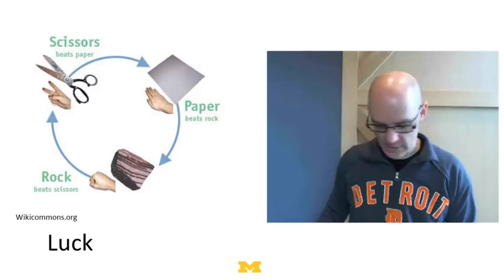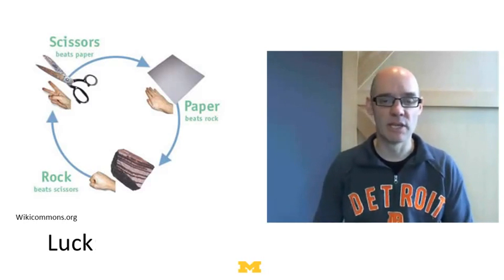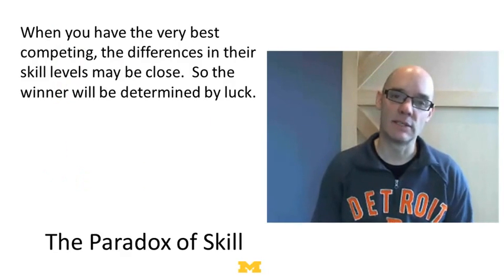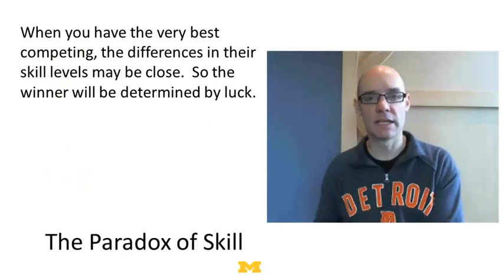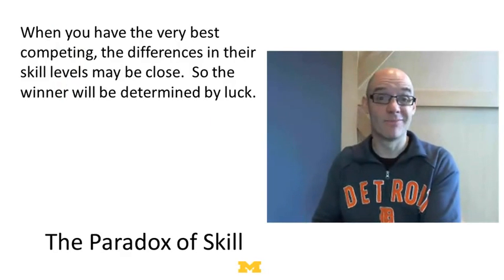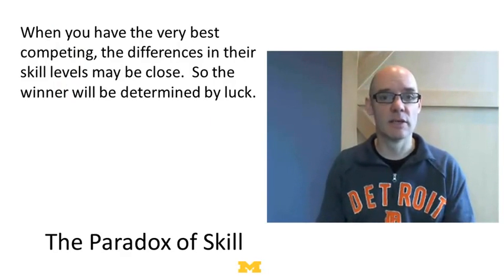Now I want to get to a profound insight Mauboussin makes in his book. Some domains are high skill, like the 100-meter dash — to win in the Olympics you've got to be really fast. Other domains, like rock-paper-scissors, are pure luck. But what Mauboussin points out is the paradox of skill: when you get the very best people competing against each other, they tend to have fairly similar skill levels, and therefore the winner is likely determined by quite a bit of luck. Paradoxically, when high-skilled people compete — less variation in skill — more luck.